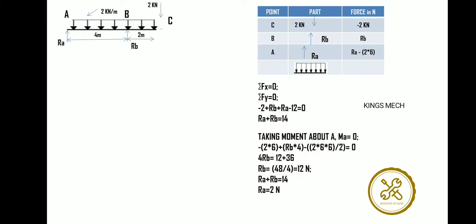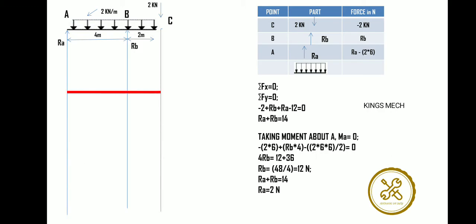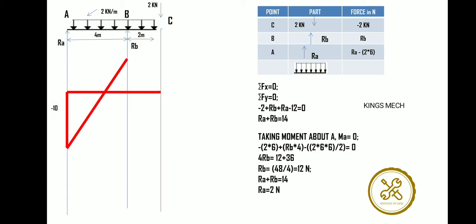Now plotting the SFD. The value at A is RA minus 12. Since RA = 2, we get 2 minus 12 = minus 10, so it goes downward. The value at B is RB = 12, which is positive. For the UDL section, it is marked as a straight inclined line.